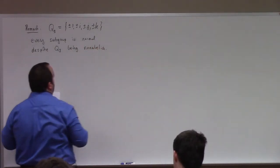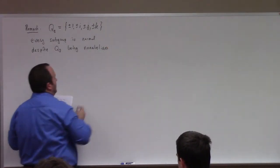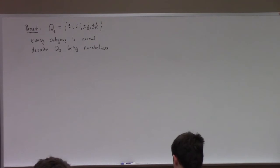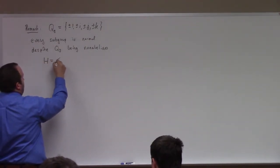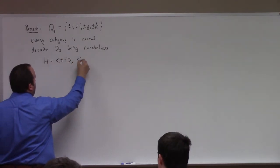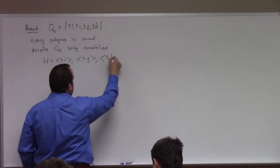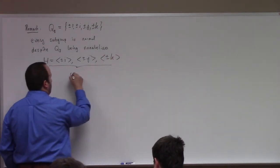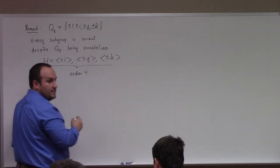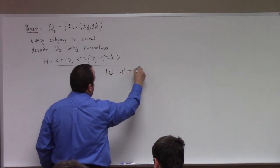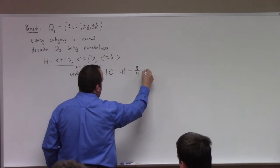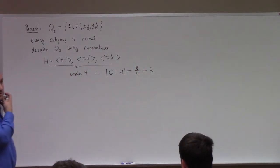So it is possible to have a non-abelian group in which every subgroup is normal. What are the subgroups of Q8? You either have H equal to like {±i} or {±j} or {±k}. These all have order 4, so the index of such H in G is 8 divided by 4, also known as 2. So these are subgroups with index 2, which means they're normal.